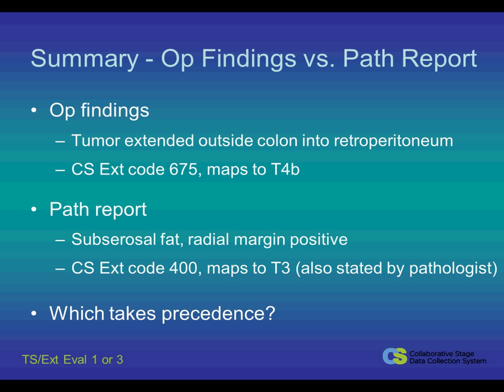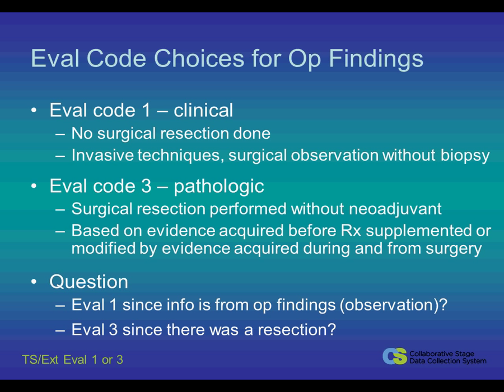So which one would take precedence? Let's look at the eval code choices for the operative findings. Eval code 1 is based on clinical classification — no surgical resection was done — and includes endoscopic exam, diagnostic biopsy, and other invasive techniques including surgical observation without biopsy. Eval code 3 is based on pathologic classification. There was a surgical resection in this case scenario, and no pre-surgical treatment was given. The code also states the evaluation is based on evidence acquired before treatment, supplemented or modified by evidence acquired during and from surgery.